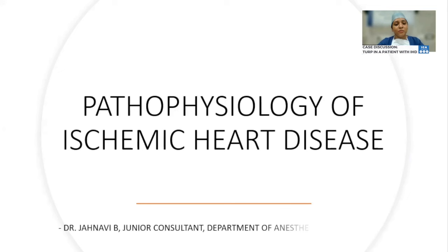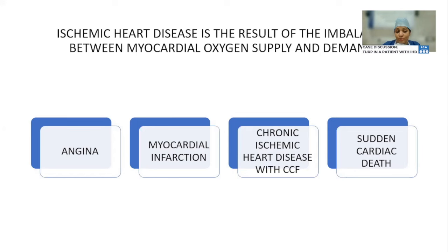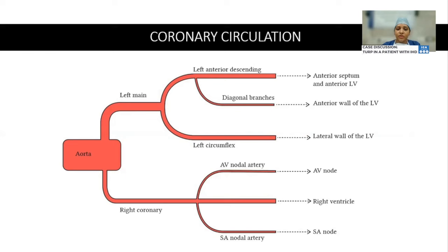Good evening. Today I'll be talking about the pathophysiology of ischemic heart disease. Ischemic heart disease results from an imbalance between myocardial oxygen supply and demand, encompassing four syndromes: angina, myocardial infarction, chronic ischemic heart disease with congestive cardiac failure, and sudden cardiac death. Regarding the coronary circulation, from the aorta we have the left main coronary artery and the right coronary artery. The right coronary artery supplies the sinoatrial node, the atrioventricular node, most of the right ventricle, and the posterior one-third of the septum. The left side supplies the anterior two-thirds of the septum and the anterior and lateral walls of the left ventricle. Importantly, most myocardial cells are supplied by the left circulation, while most of the conduction system is supplied by the right.